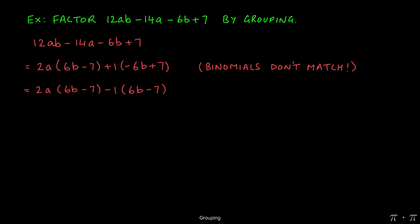Now we see that the two binomials are identical, so we can factor those out of the entire expression. This leaves us with 6b minus 7 as the GCF, and when we divide this first term by 6b minus 7, we're left with 2a. That's the first term inside the parentheses, and when we divide this second term by 6b minus 7, we're left with negative 1.